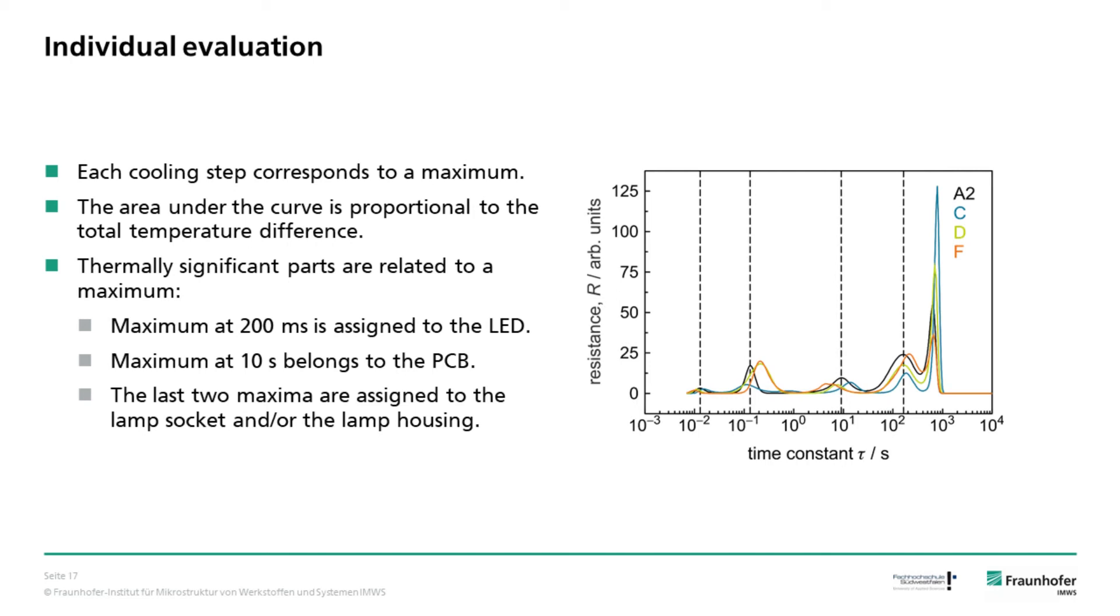Additionally, the significant building blocks of the lamp can be identified in the time constant spectrum. The maxima at the time constant of 200 ms are assigned to the LEDs, whereas the maxima at the time constant of 10 seconds belongs to the PCB. And the last two peaks are related to the lamp socket and housing. Here we have a look at the average time constant spectra of the LEDs in the lamps. This is practical to get an overview of their general behavior.